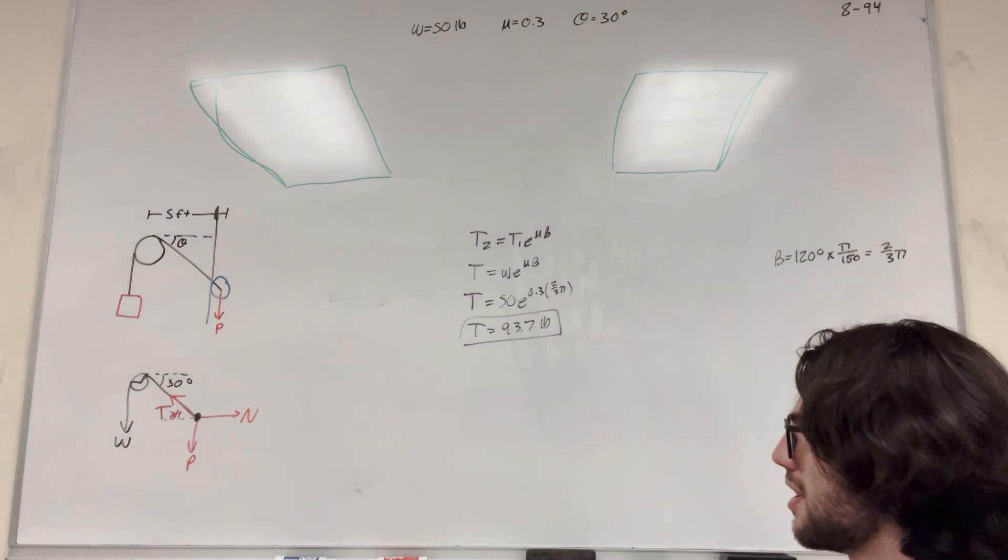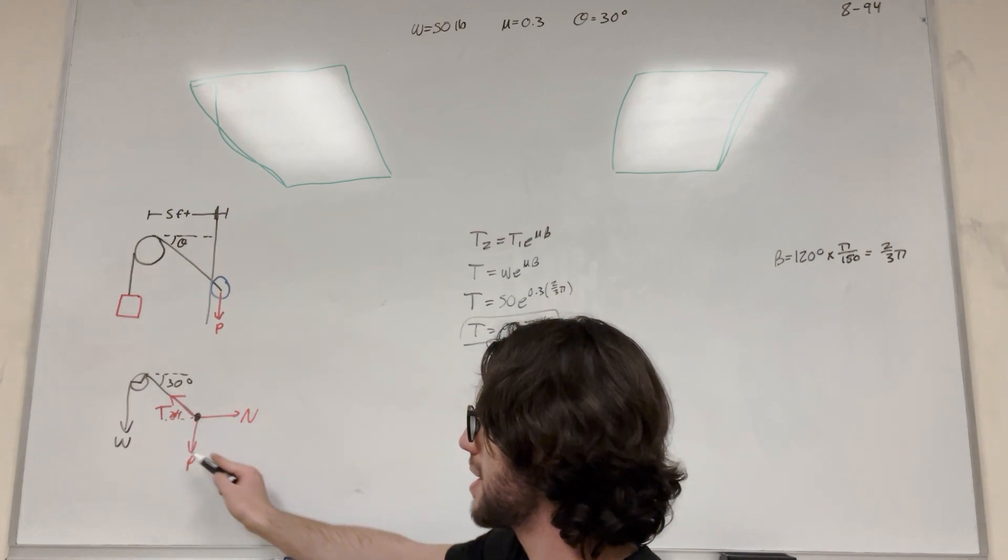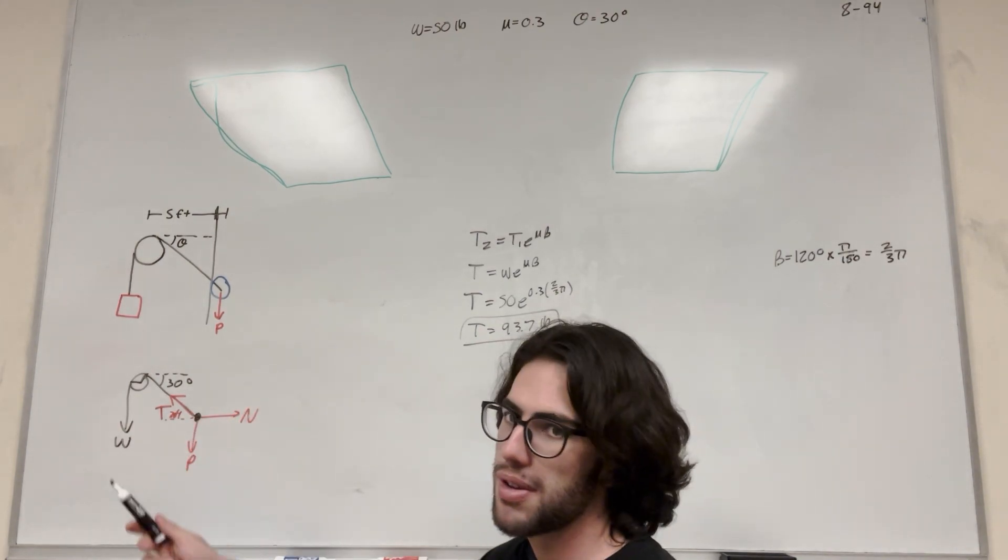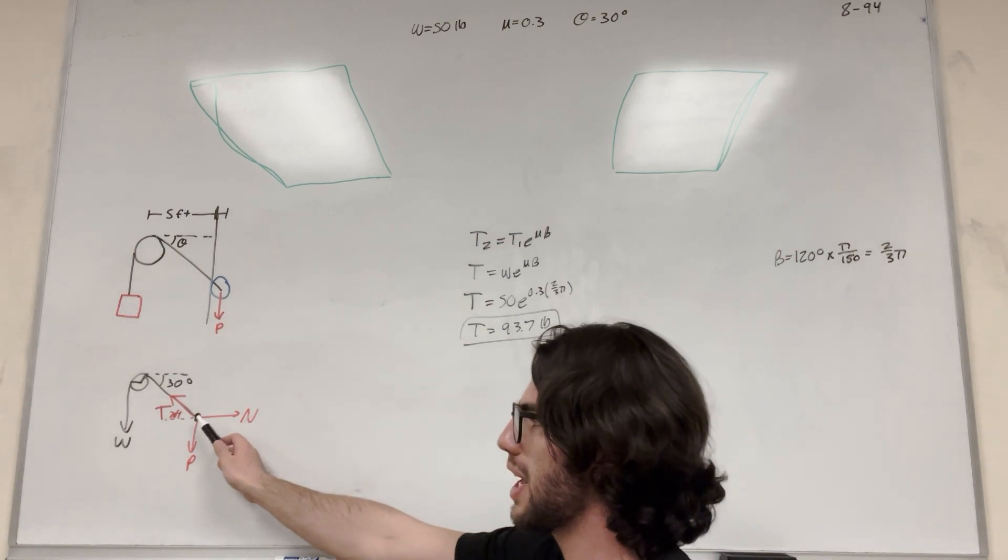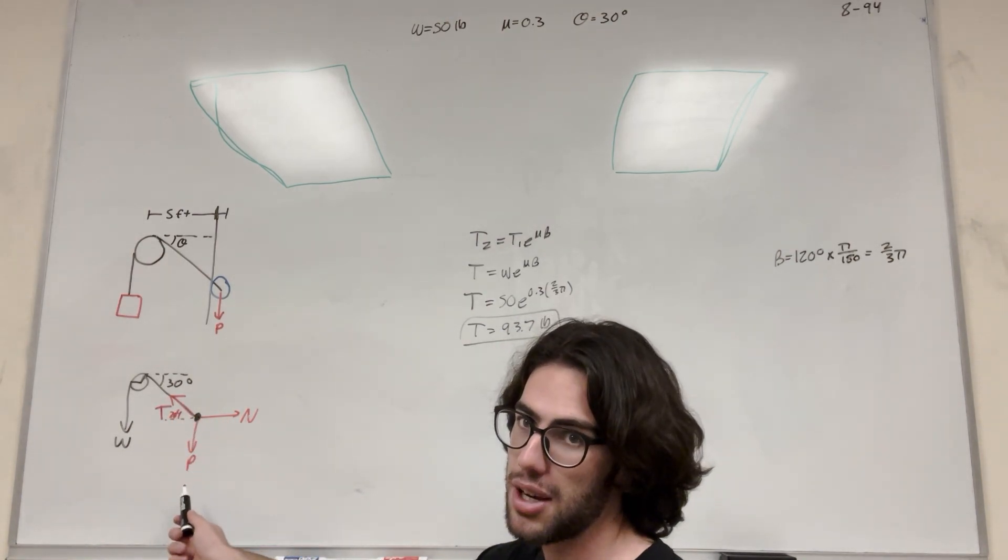So that's not the answer yet. We're looking for P. So we have this system here. So now all we have to do is draw a force body diagram at this area, like we did, and then just do sum of the forces to find P. So this is the max tension that we can have in this rope for the system to be at equilibrium. So then we just have to find what that P equivalent is.